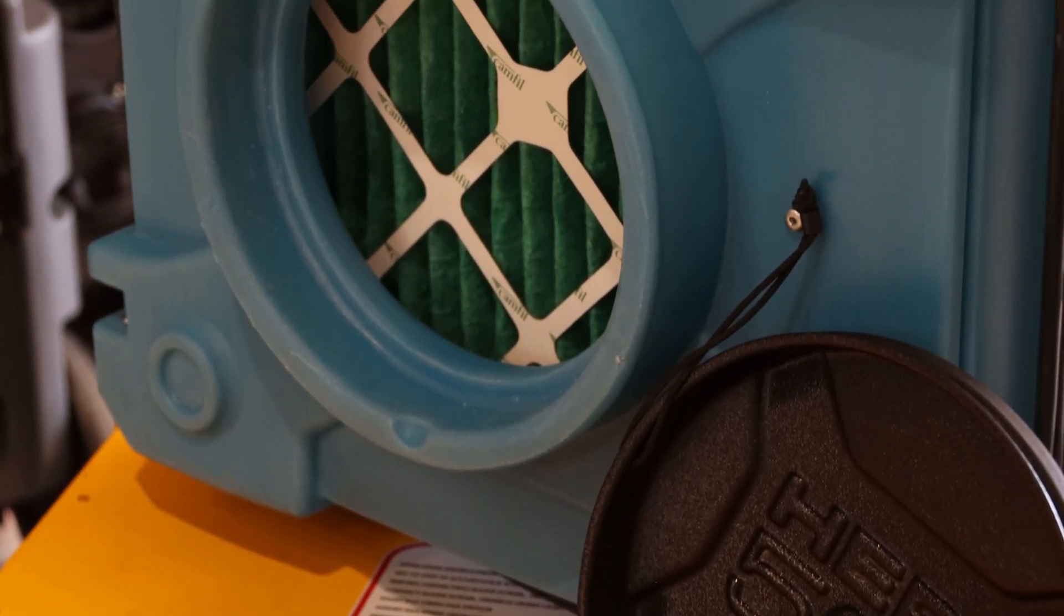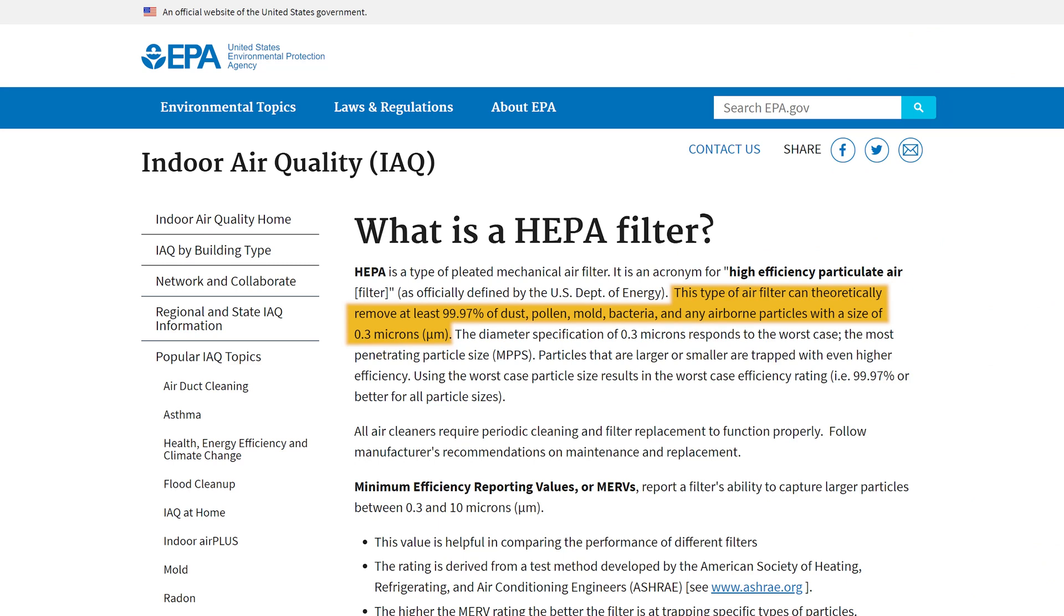A popular option is the HEPA air scrubber. These pull air through a series of filters that removes 99.97% of airborne particles 0.3 microns or larger. There are also extra filter options available for issues like odors or for even finer particle filtration.